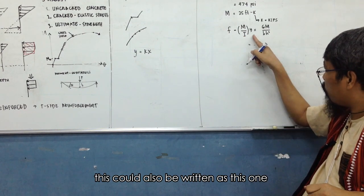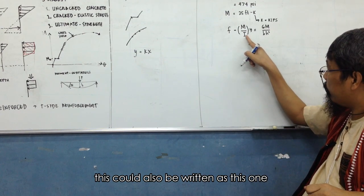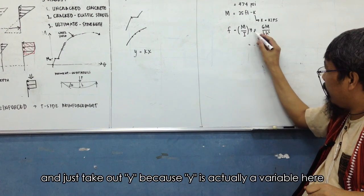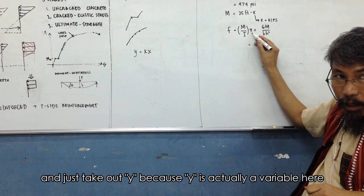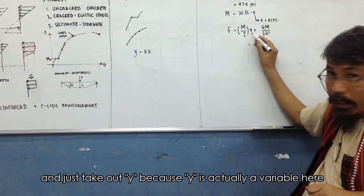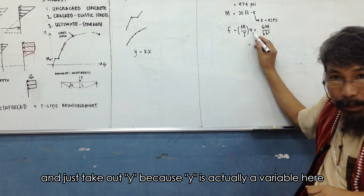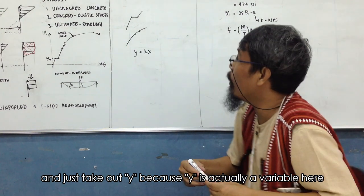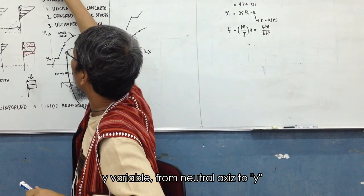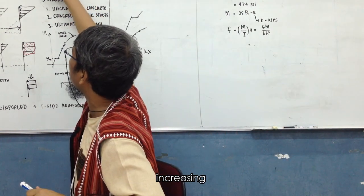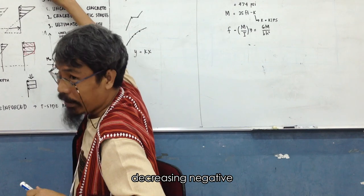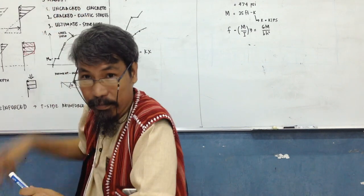So this could also be written as this one. I just take out y because y is actually the variable here. Y variable, y variable from neutral to y increasing, decreasing negative, increasing positive.